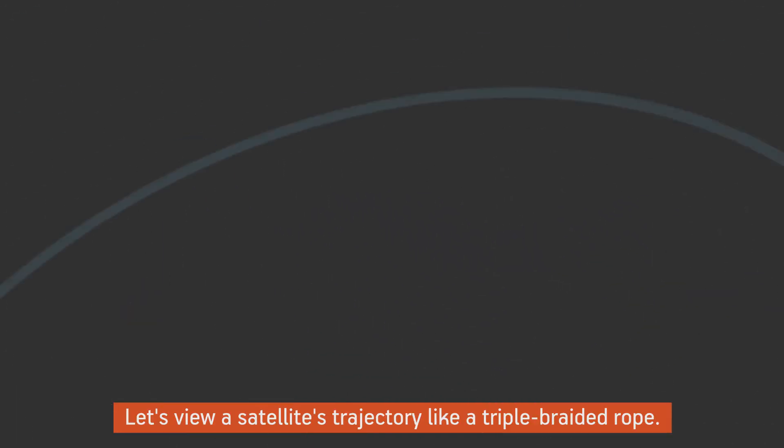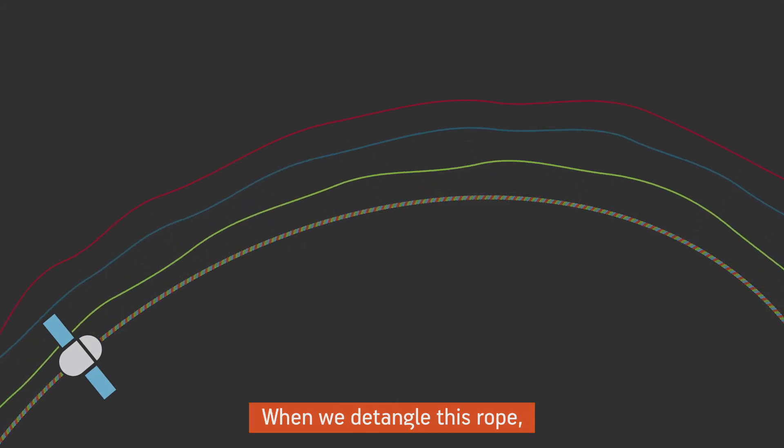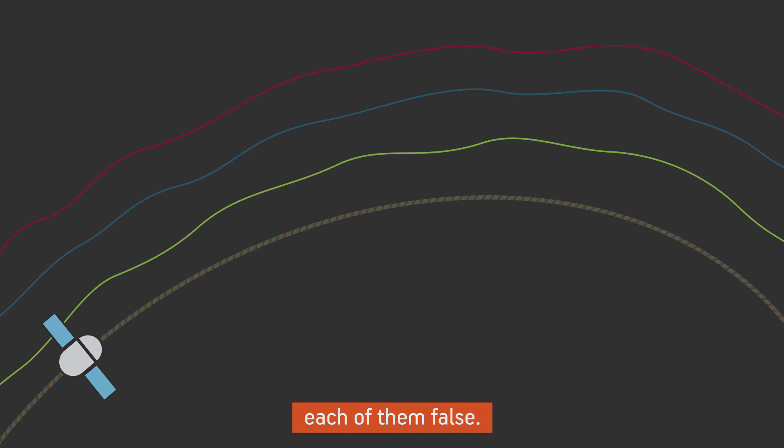How does it work? Let's view a satellite's trajectory like a triple-braided rope. When we untangle this rope, we get three trajectories, each of them false.